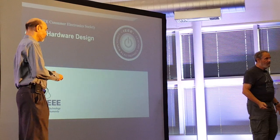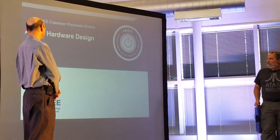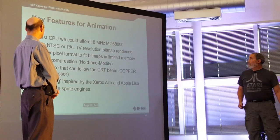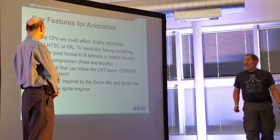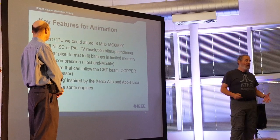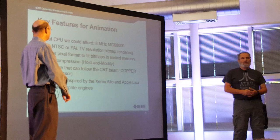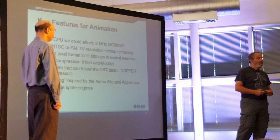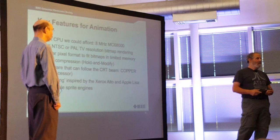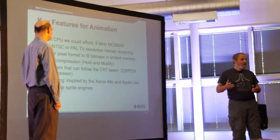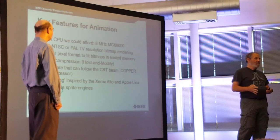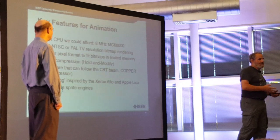Now we have our requirements and have listed the key innovations. For animation, we got the best CPU we thought we could afford — the 68000, projecting we might pay 12 whole dollars for it in large quantity by the time we hit production. We wanted to finally leave the 8-bit processor space and jump to the 16-bit space.